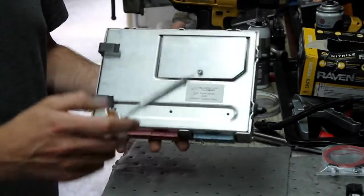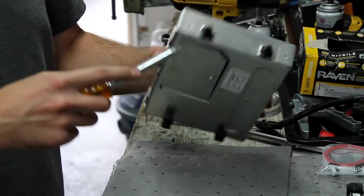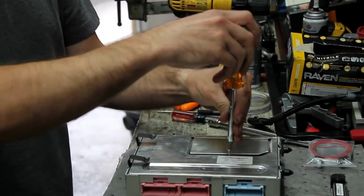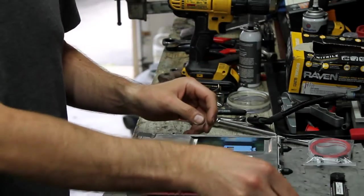Take your T15 Torx, take out the end cap bolts, there's four of them. Remove your EEPROM cover here, set it off to the side, we'll reuse that later.